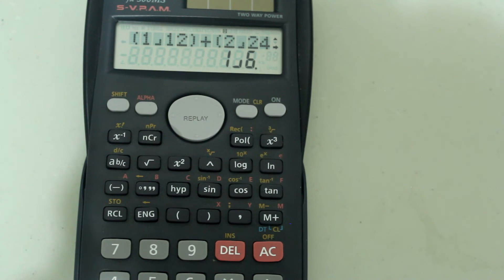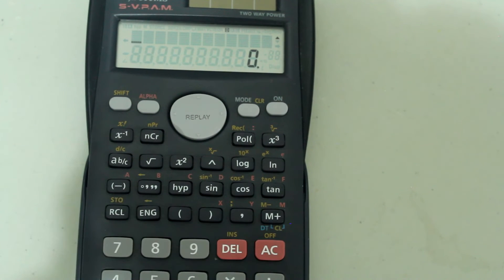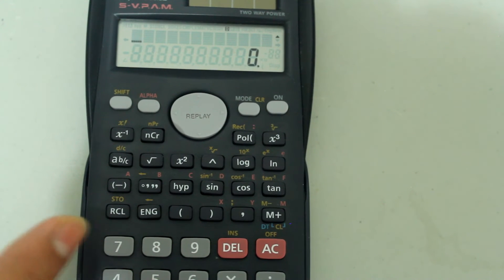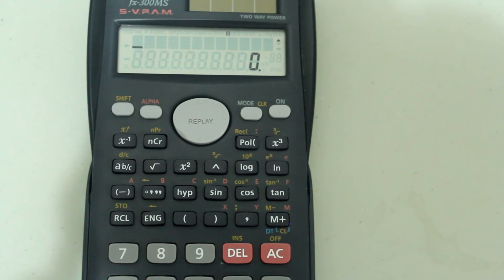Now, since we know how to do it just with fractions, let's do it with a mixed number. So, for example, let's add 4 and 3 fourths plus 1/12. Remember I said, when there's a mixed number, there are two fraction symbols, and the first one just acts to separate the whole numbers.